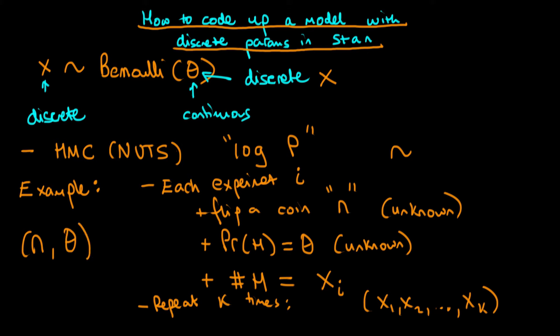In this model we've got two unknowns: the number of times we flip the coin n, and the probability the coin lands heads up, parameter theta. One of these parameters is okay — namely theta, because it's a continuous parameter — but n is not okay in Stan because it is a discrete parameter; n must be an integer. So unfortunately we can't code up this model naively in Stan, but it turns out we can nevertheless use a bit of a trick to code it up.